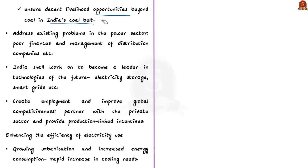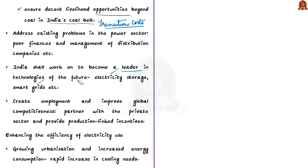The author suggests creating a multi-stakeholder just transition commission representing all levels of government and affected communities to ensure decent livelihood opportunities beyond coal in India's coal belt. It is also necessary to ensure the transition cost to a low carbon future does not fall on India's poor. Existing problems in the power sector — including poor finances and management of distribution companies — must also be addressed. India should work to become a leader in future technologies such as electricity storage, smart grids, and electrification of transportation, partnering with the private sector and using production-linked incentives.